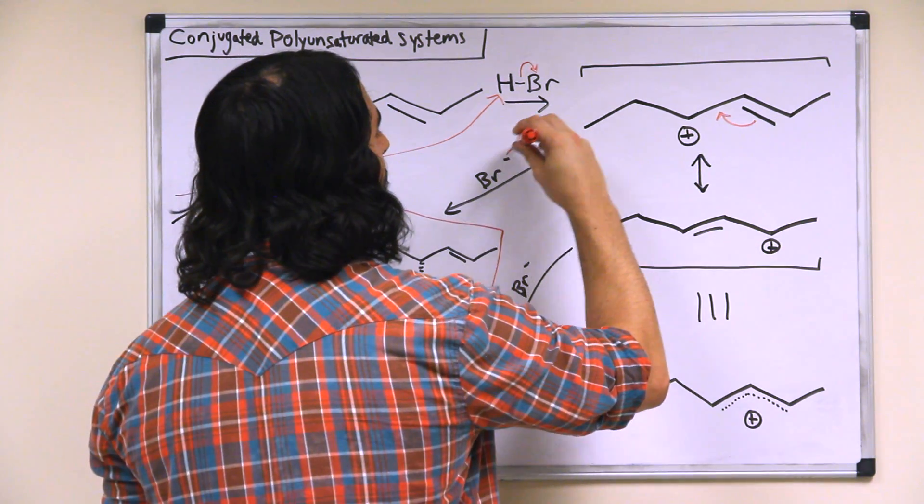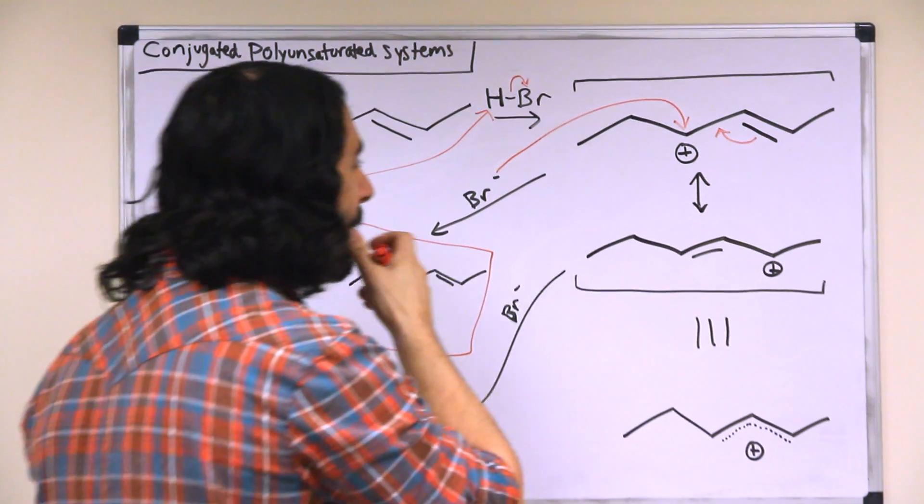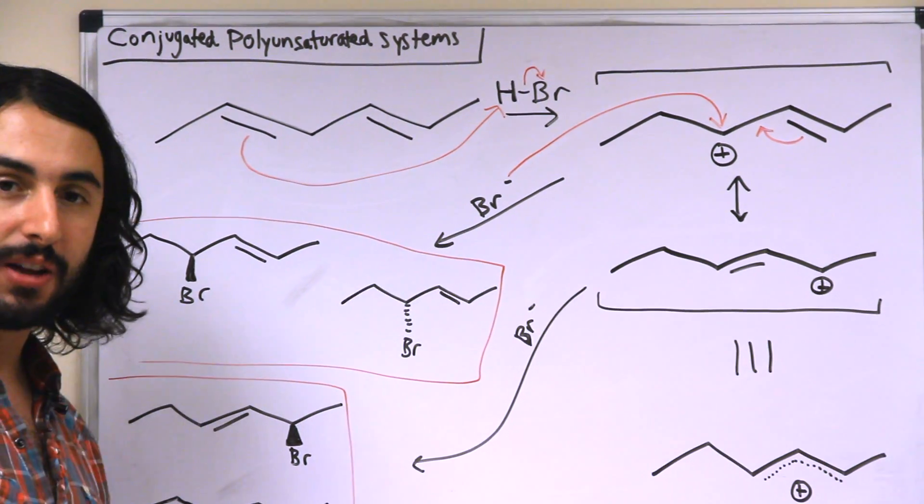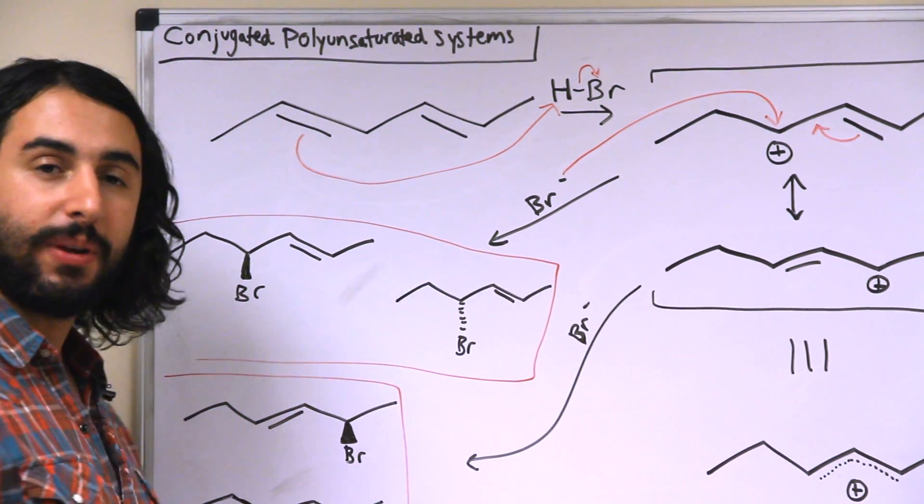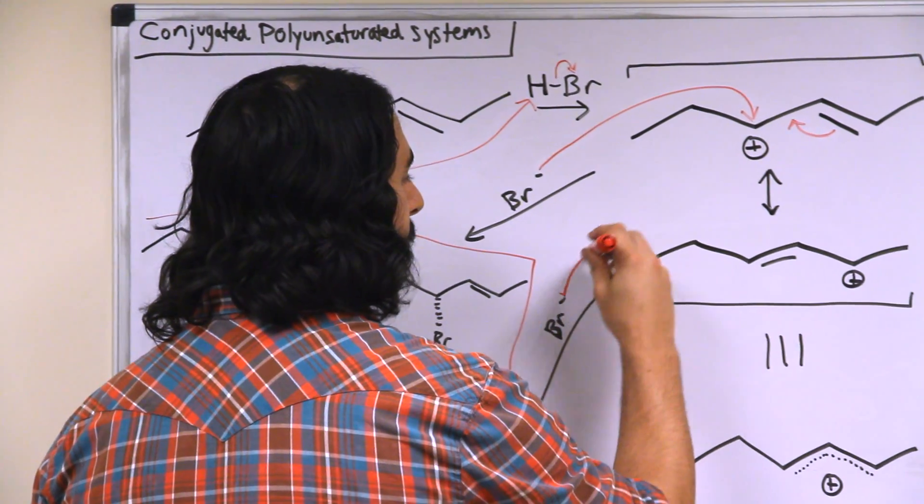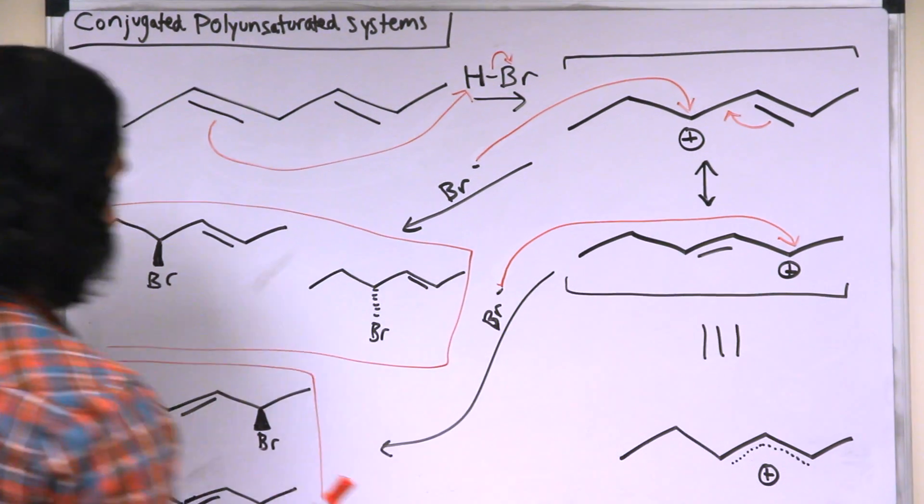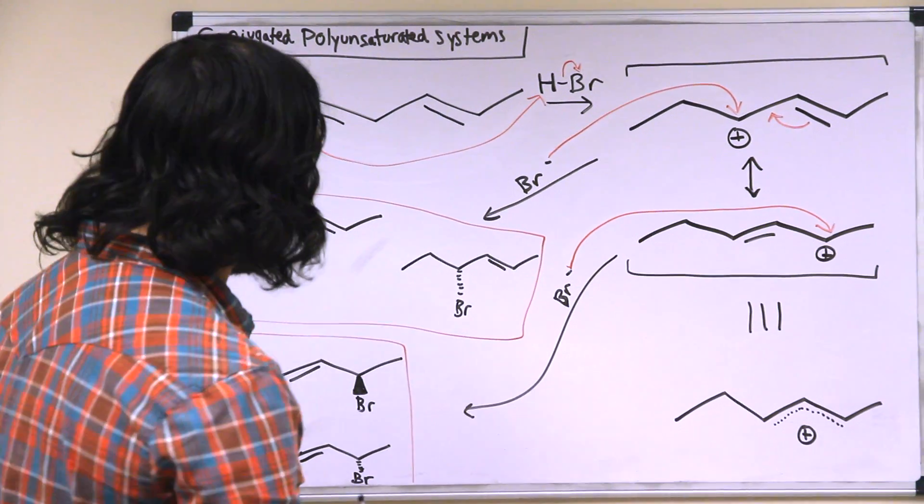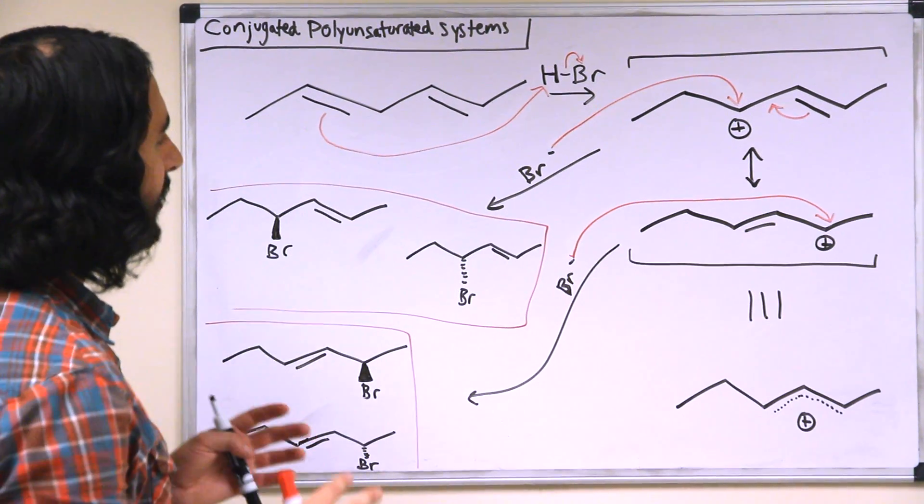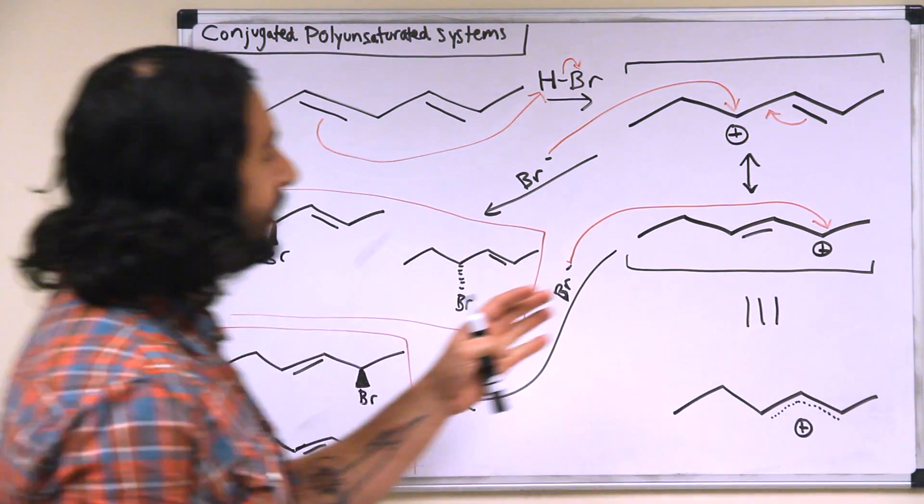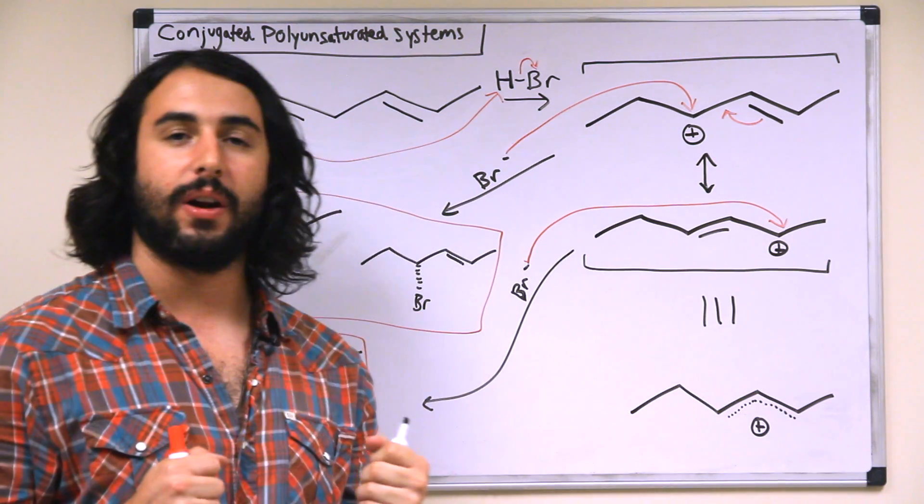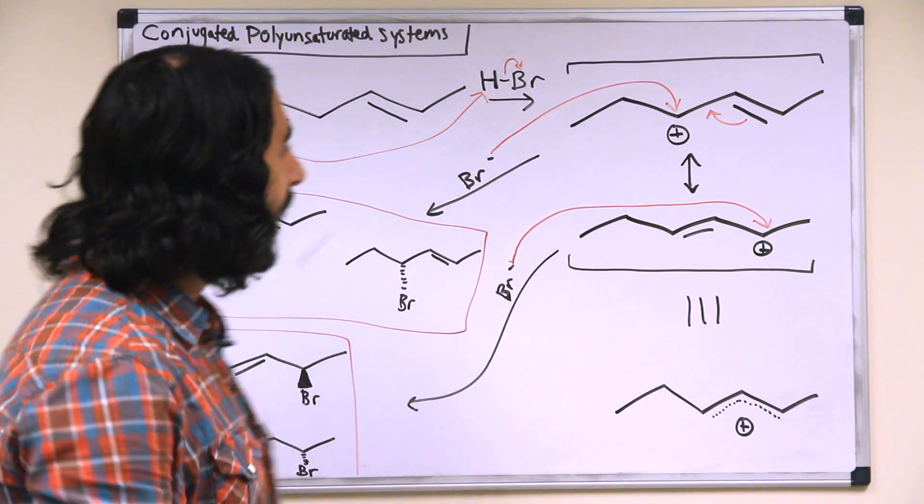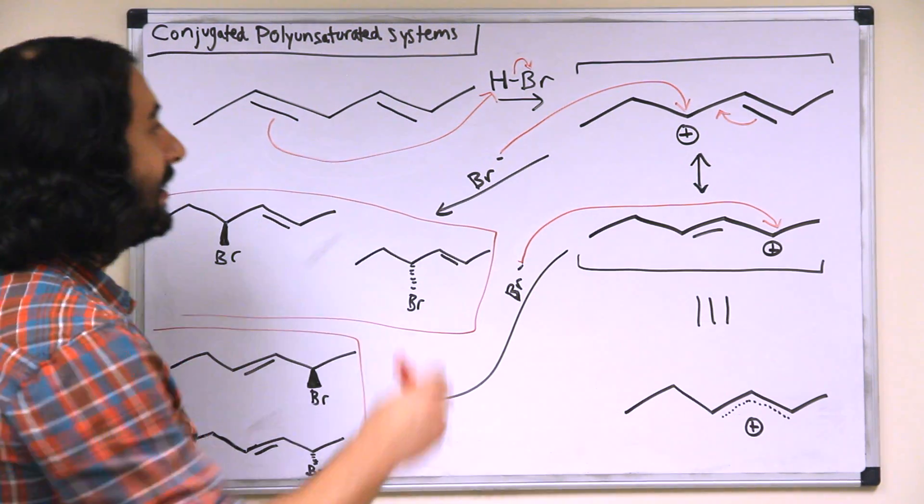So let's say that the bromide attacks this resonance structure and the bromide goes there, we're going to get a racemic mixture of compounds with the bromine at that position on the molecule. What we need to understand is that because of the resonant stabilization here we are creating the possibility for a much larger number of products in the product mixture.